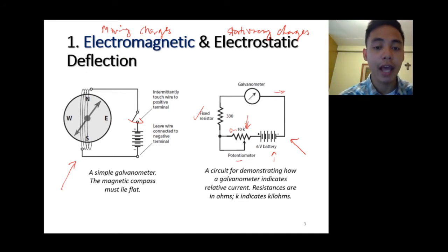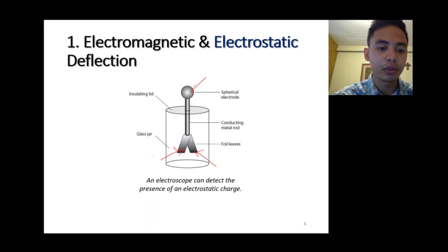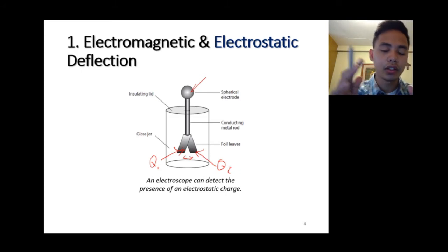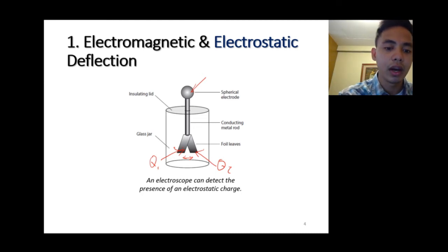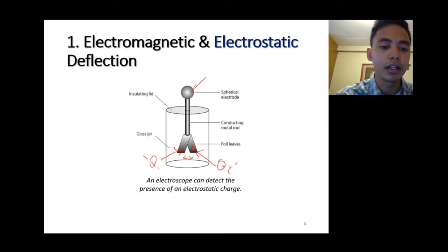This is the principle of the galvanometer and ammeter. For electrostatic deflection — the principle used for voltmeters — you have two electrodes, body Q1 and body Q2. Depending on the difference in their charges, they move either towards or away from each other, either attracting or repelling. If there's no difference in charges, there will be no attraction or repulsion.